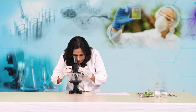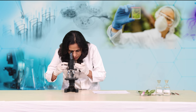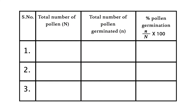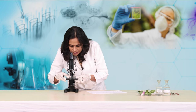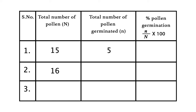I will count again. In the first microscopic field, I have seen approximately 15 total pollen grains, and out of 15, five pollen grains have germinated. This is our observation in the first microscopic field. Now we are going to take observations in different microscopic fields. Moving the slide, in the second field approximately the total number of pollen grains are 16, and out of 16, seven pollen grains have germinated.